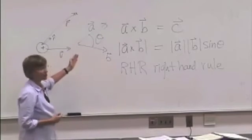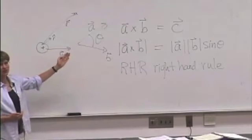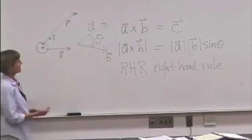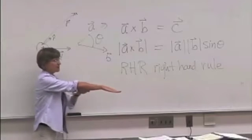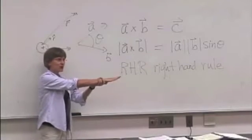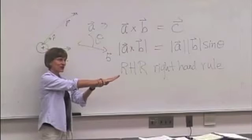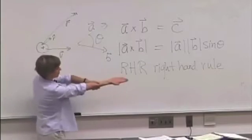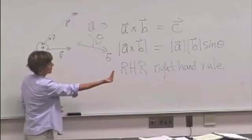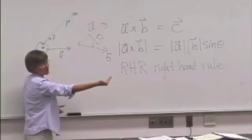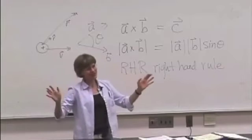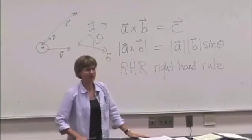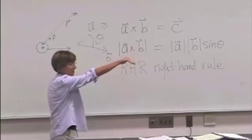And the order matters, because let's do B cross A. If we do B, now notice that if we point our fingers in the direction of B, we're going to break our wrist if we try to curl our fingers up. So we actually have to rotate the wrist, and then curl the fingers through theta, and now your thumb sticks out that way. And so B cross A is not the same as A cross B. The order matters, so it's always first vector, second vector.